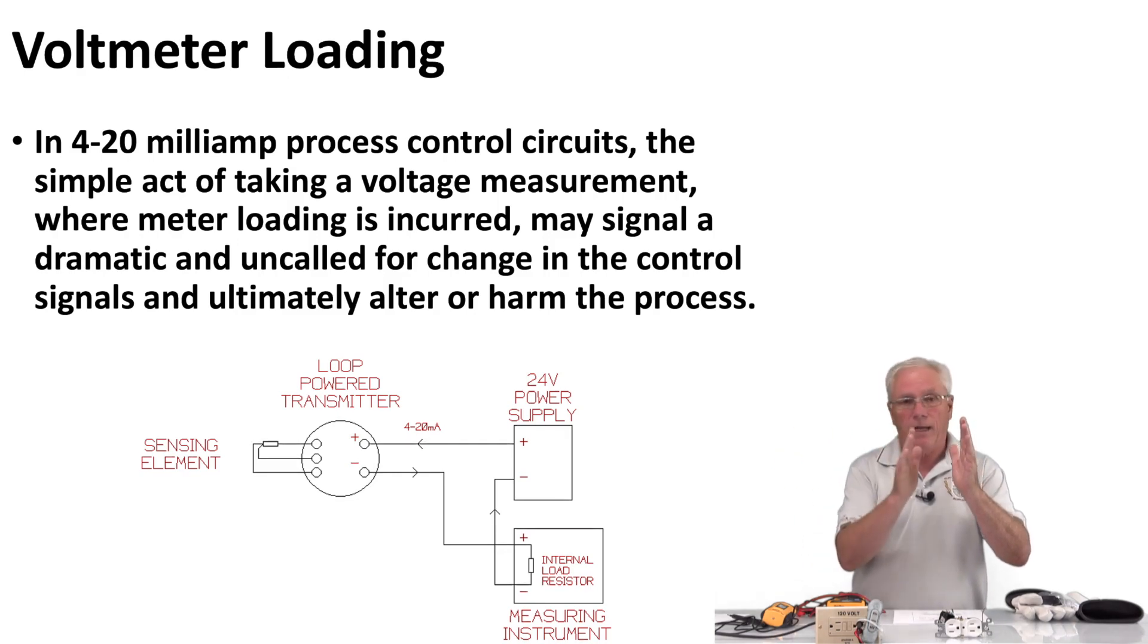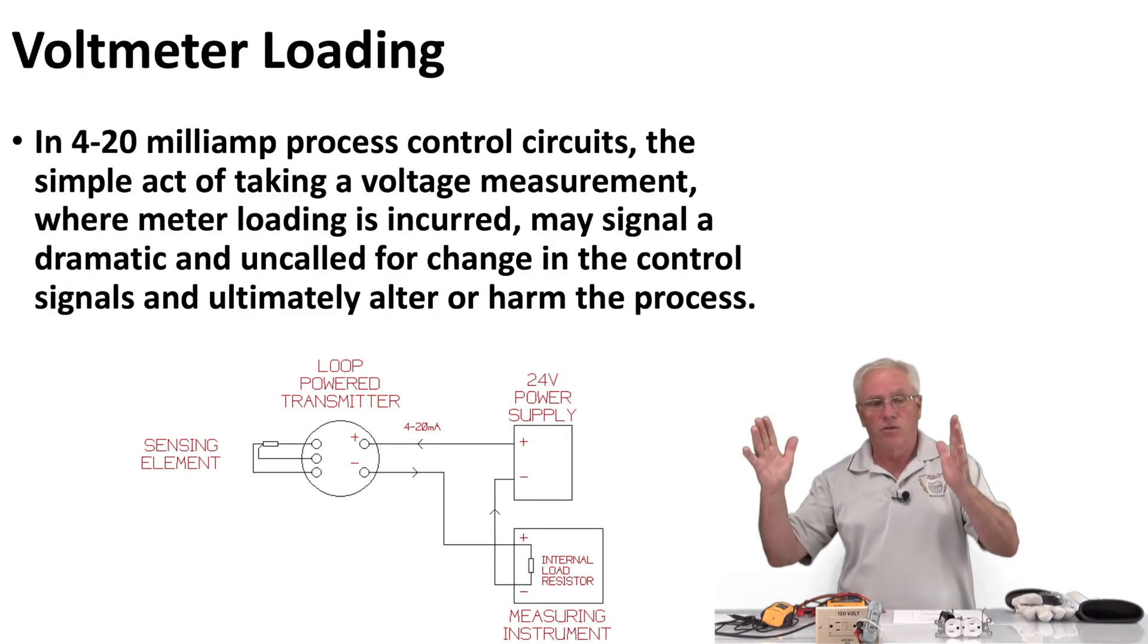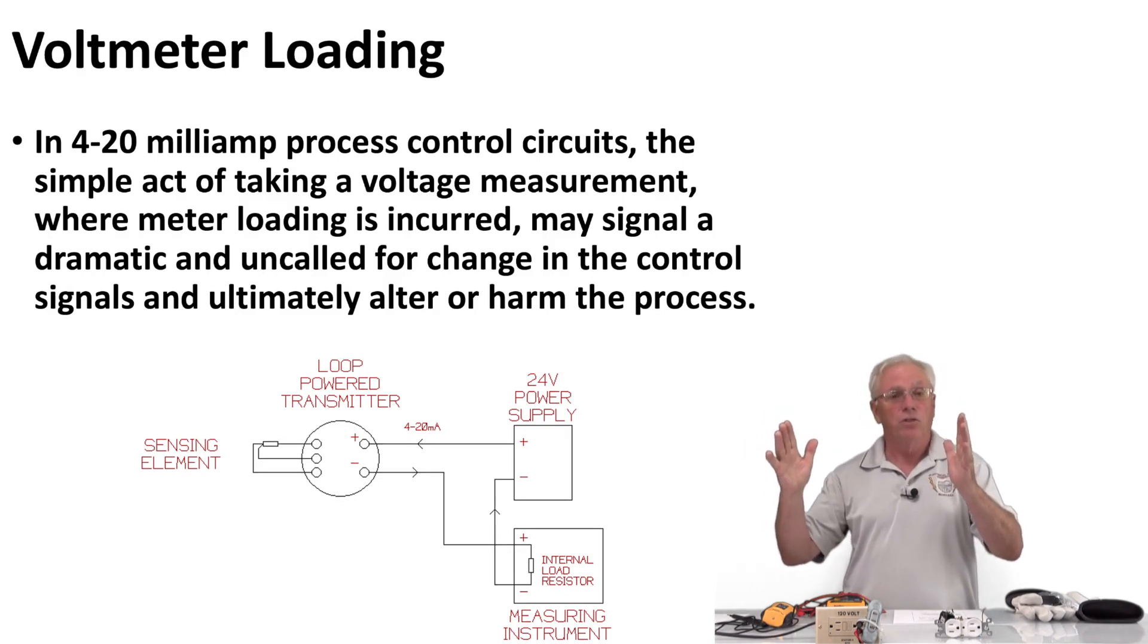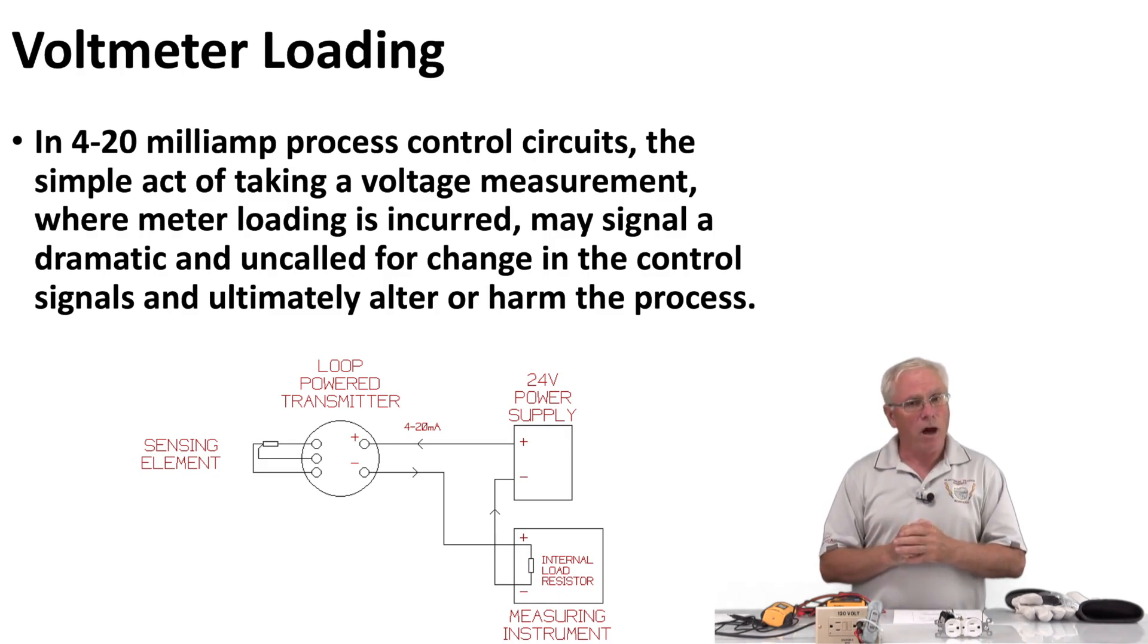It worked pretty fine, but one day, one of the other instructors wanted to take a voltage measurement, and we were on a really high, bright intensity. He took a voltage measurement, and instantly the circuit changed, and the light dimmed just by taking a voltage measurement. That's a perfect example of what we're talking about. In a minute, we're going to take a look at a very common circuit, and I will show you how meter loading can work on a really simple circuit.